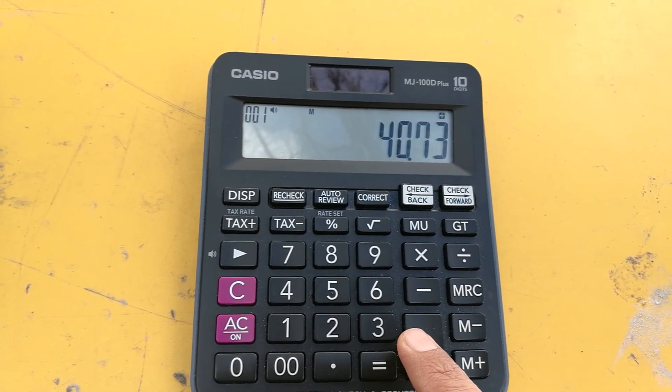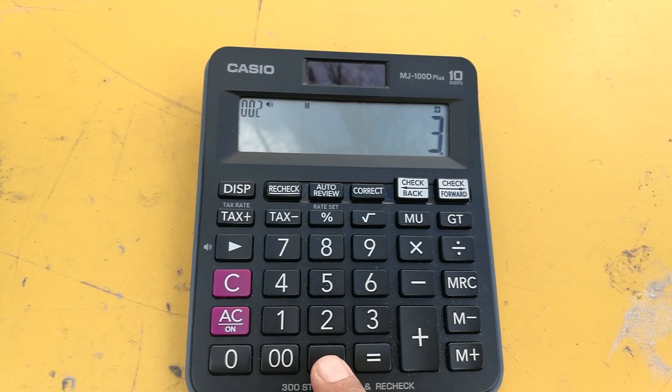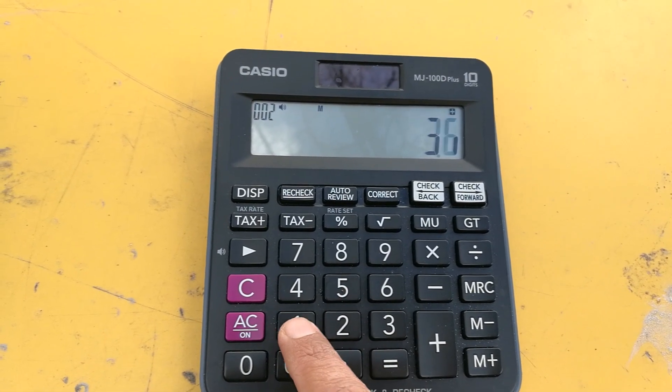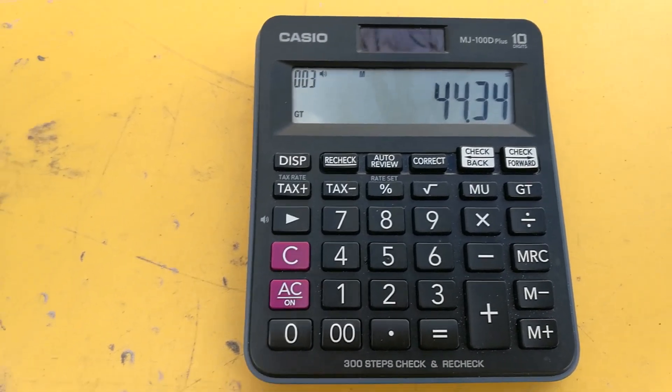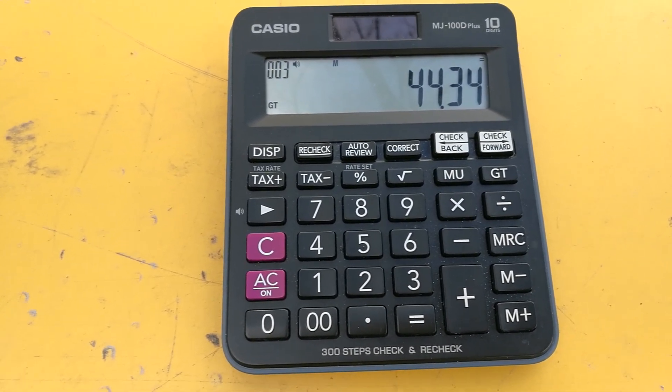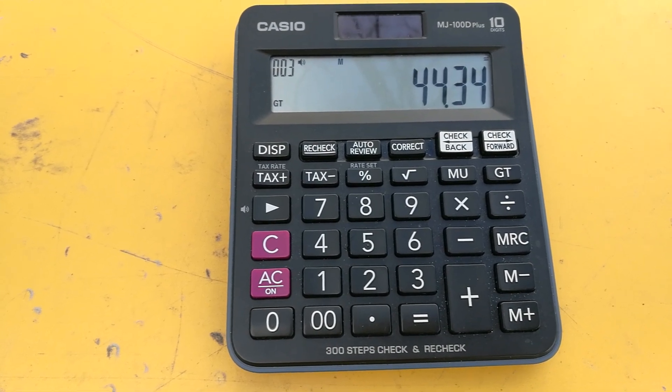So we will add that answer 3.61 with 40.73, so the answer is 44.34 including the sales tax. This is how you can calculate the sales tax on your calculator.